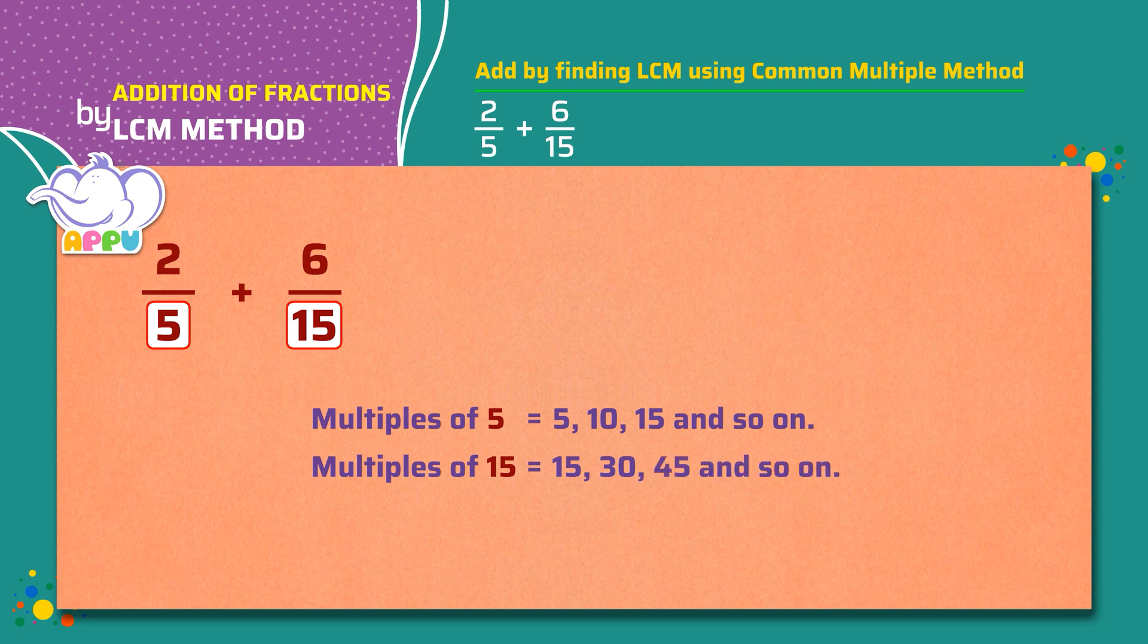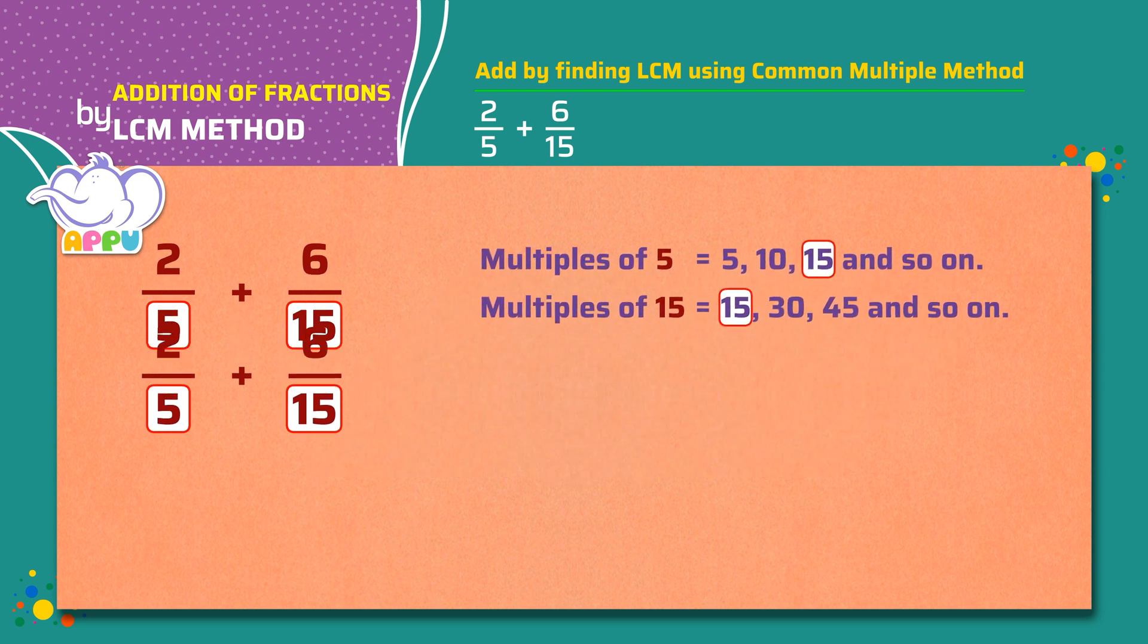We see that 15 is a common multiple of 5 and 15. So, let's make the denominators the same as 15. We multiply the denominator of the first fraction with 3. That is, 5 times 3 equals 15.